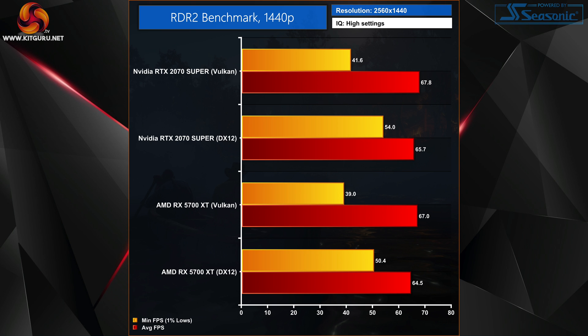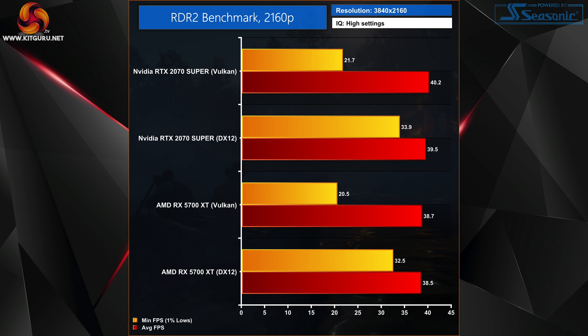Moving to 1440p with the built-in benchmark, average frame rates are again slightly higher with Vulkan — three percent for the 2070 Super and four percent for the 5700 XT — but it is very close between the two APIs. The real difference comes with the one percent lows, where DX12 offers an even bigger improvement at this resolution: the 2070 Super's one percent lows improve by 30 percent, and the 5700 XT's by 29 percent — the difference between a choppy and a smooth gaming experience.